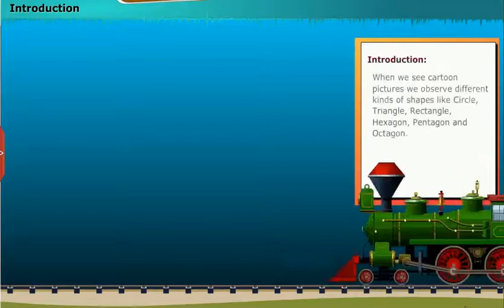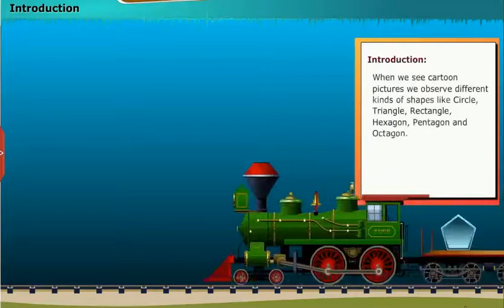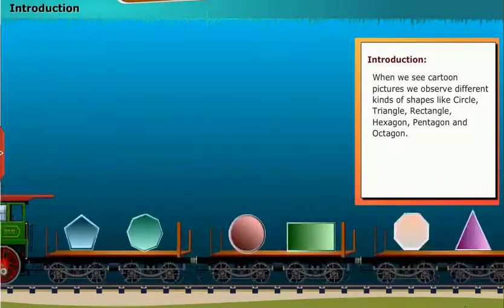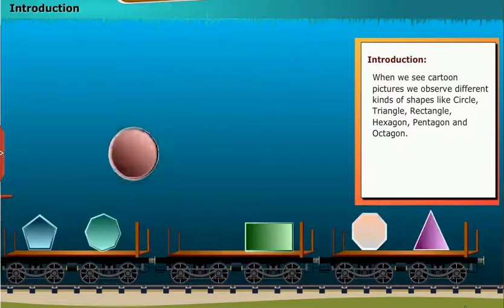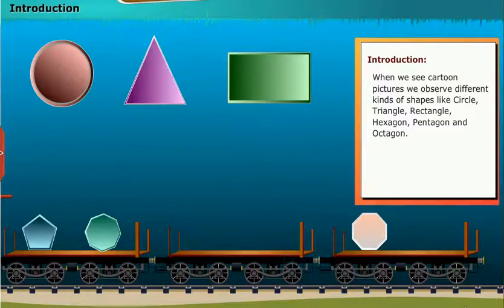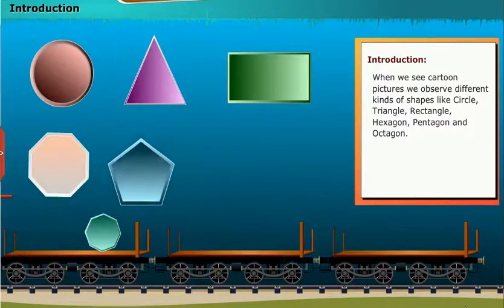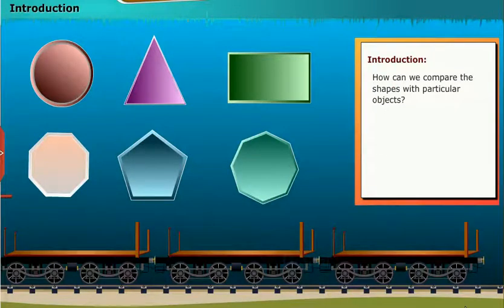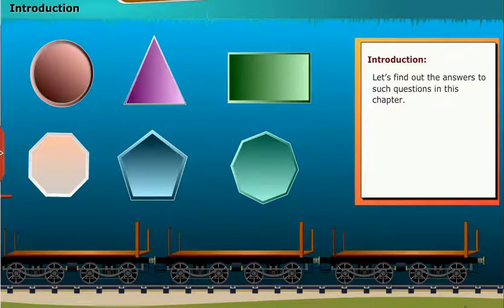When we see cartoon pictures, we observe different kinds of shapes like circle, triangle, rectangle, hexagon, pentagon, and octagon. How can we compare these shapes with particular objects? Let's find out the answers to such questions in this chapter.